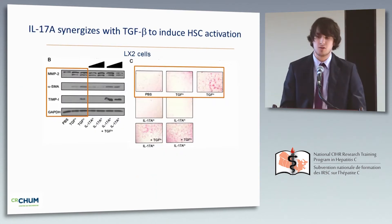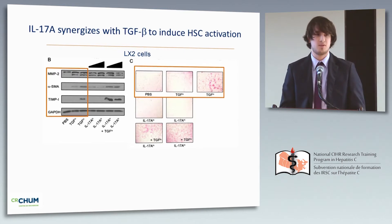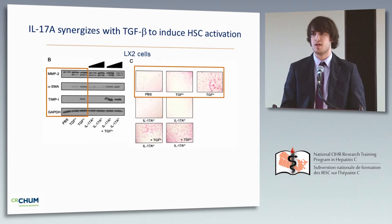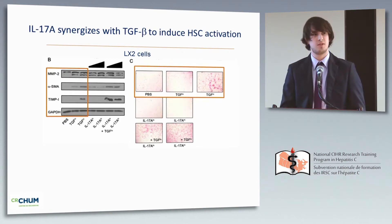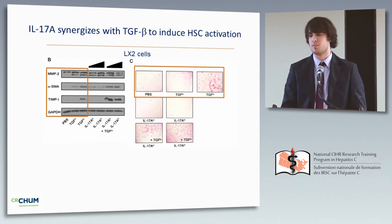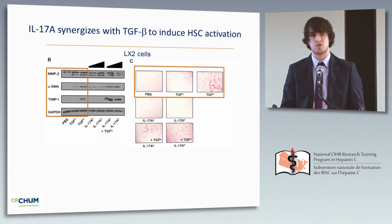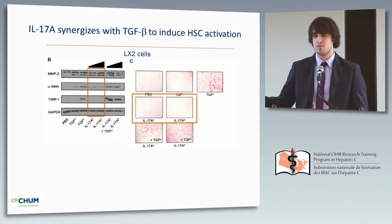Here are our controls. The first condition on the Western blot is PBS-treated cells, which do not express TIMP1 or smooth muscle actin and cannot produce collagen type 1. We used two doses of TGF-beta as positive controls: a low dose, which cannot activate stellate cells as shown by Western blot or picrosirius red staining, and a high dose, which fully activates stellate cells with strong production of TIMP1, smooth muscle actin, and collagen type 1.